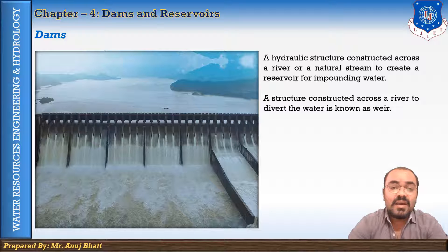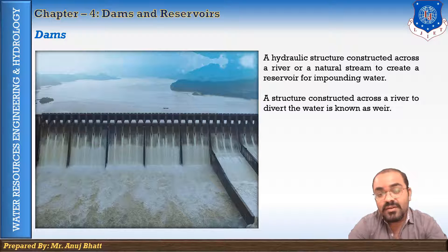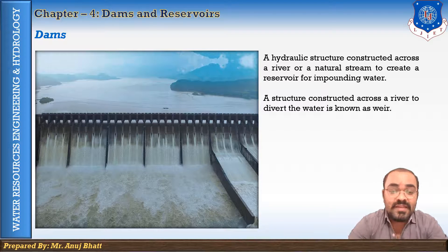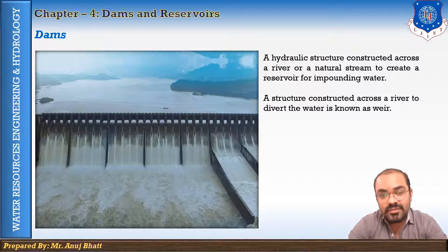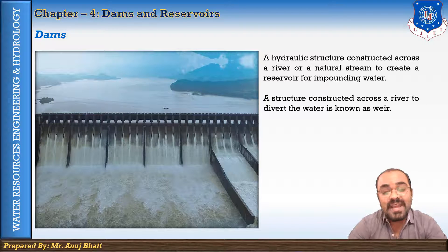A large area may be submerged depending upon the water spread of the reservoir. There is one more structure similar to a dam but not exactly a dam, and that is a weir. A weir is a structure built across the river, but the basic purpose of constructing a weir is not to store water but to divert the water. So there is no reservoir on the upstream of a weir.